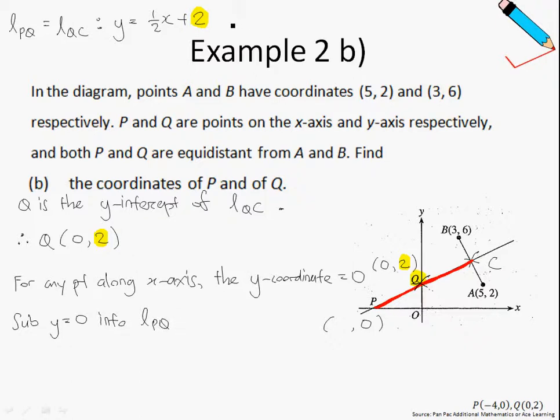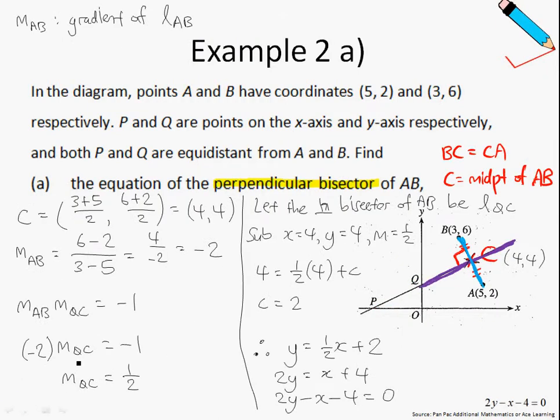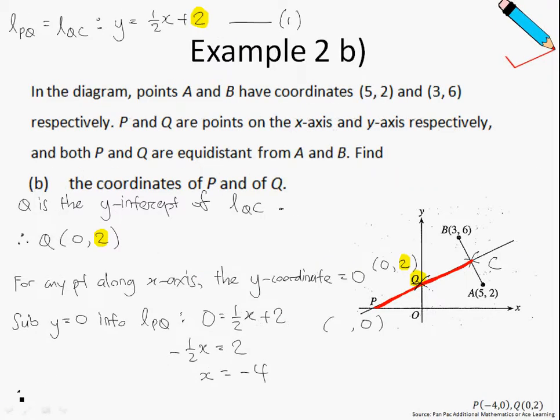Therefore to find point P, we will just substitute Y equals 0 into the equation of line PQ. If I do that, I will get 0 equals to half X plus 2. So negative half X equals to 2, and dividing both sides by negative half, I will just get X equals to negative 4. Therefore, the coordinates of P is simply (-4, 0).